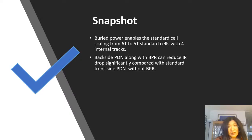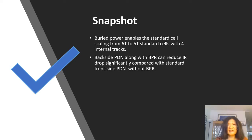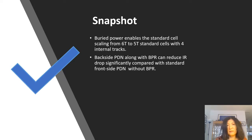To summarize the power section: Buried Power Rail enables standard cell scaling from 6-track to 5-track without compromising internal track access. The natural delivery method for BPR is backside PDN. Backside PDN along with BPR can significantly reduce IR drop compared with the standard front-side PDN without BPR.